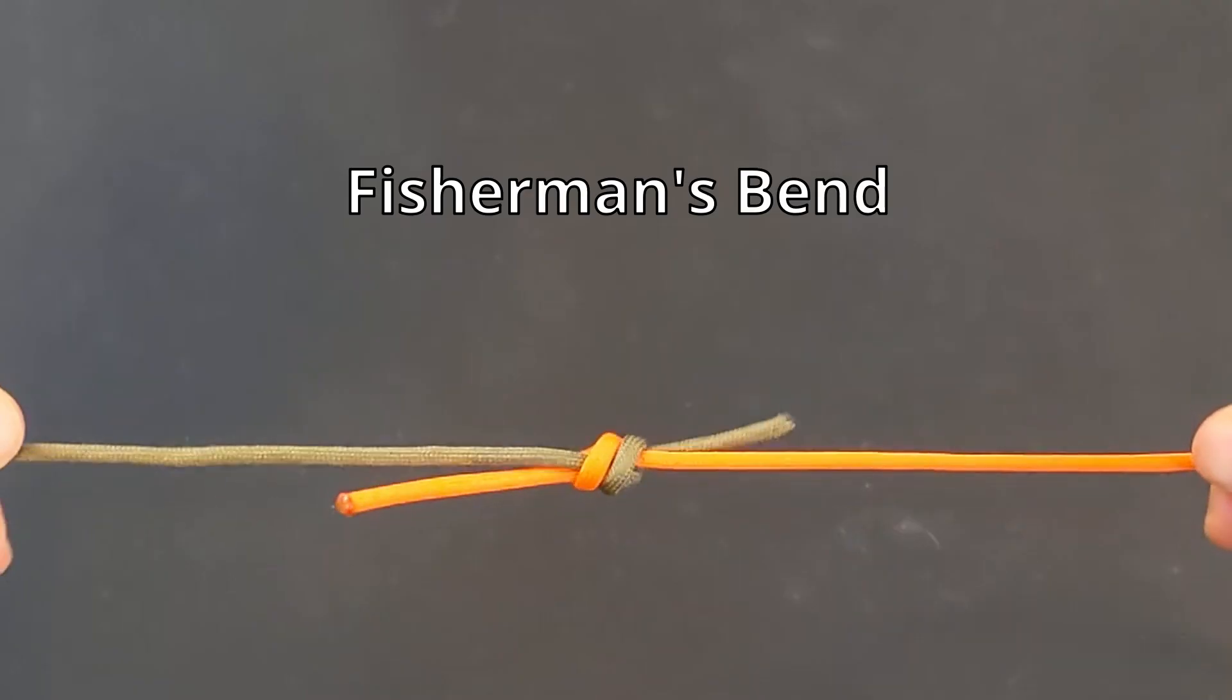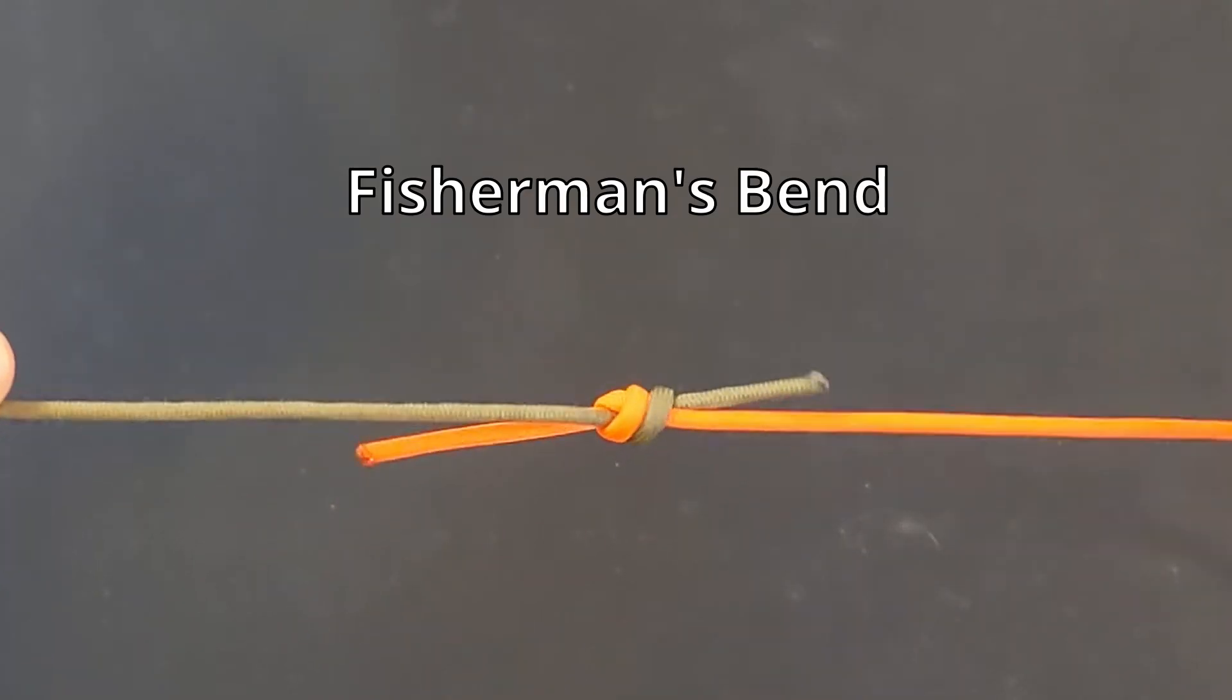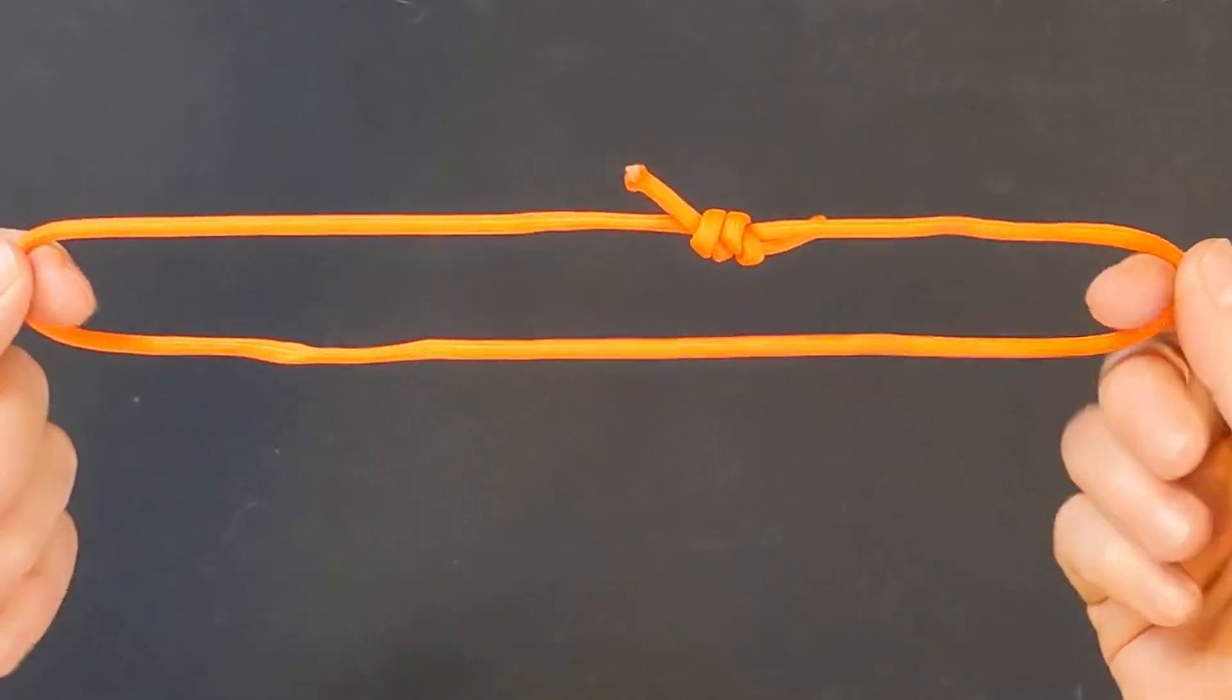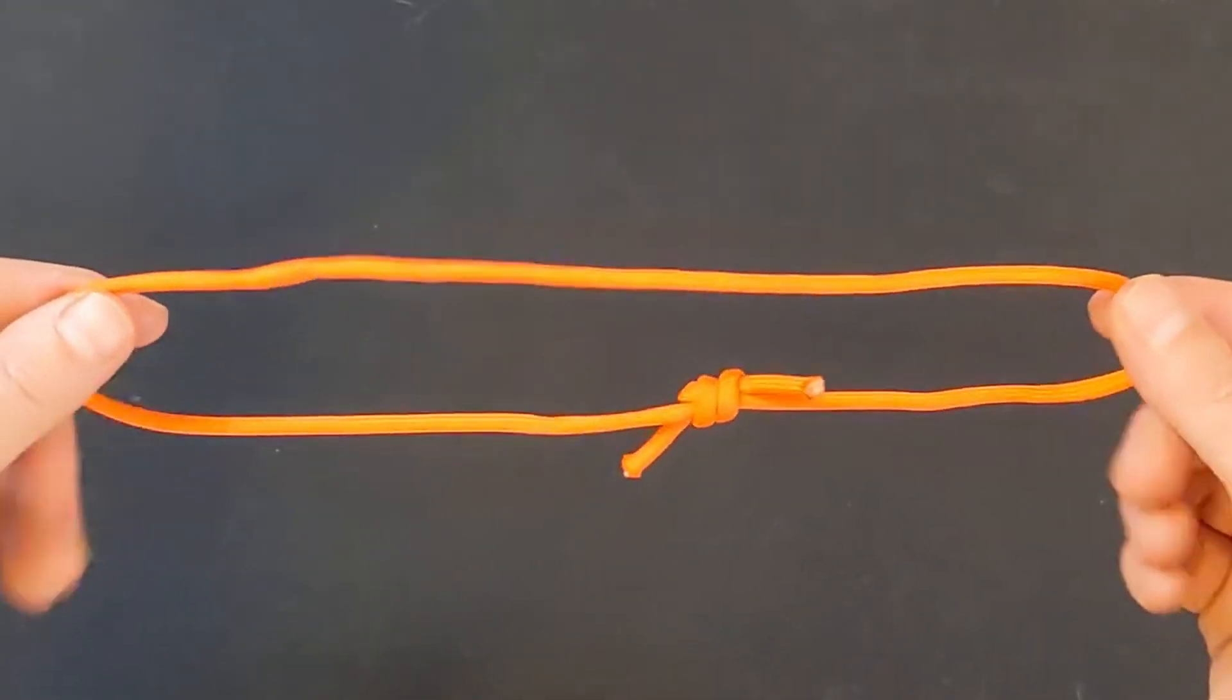The Fisherman's Bend is a great way to join two pieces of line together, extending the length of your rope. You can also use it to make a loop out of a single line.